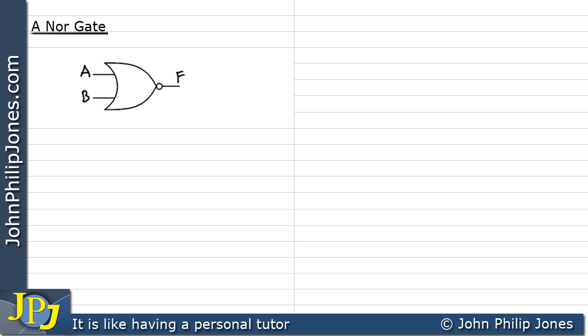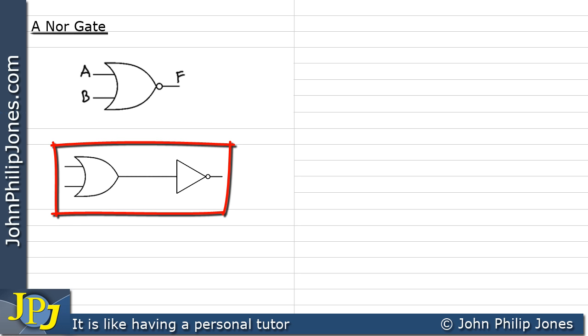Now if we have a look at the combinational logic circuit for this, it's shown here. We can see that we have an OR gate followed by a NOT gate. Now I'm going to label this one up with the inputs A and B and the output being F here.